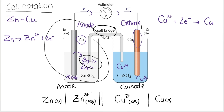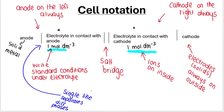These half cells are set up under standard conditions, which is one mole per cubic decimeter. The electrolyte has to be at that particular concentration, so we need to write that concentration underneath our aqueous ions. So the cell notation again has the salt bridge in the middle represented by double lines, everything to the left is the anode, and everything to the right is the cathode.